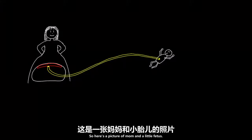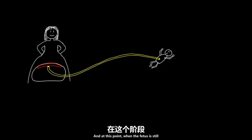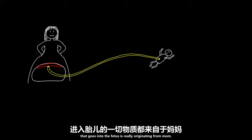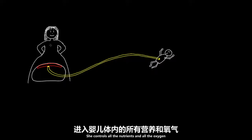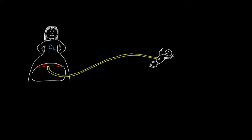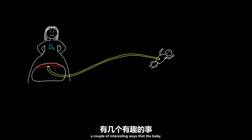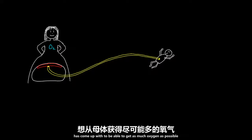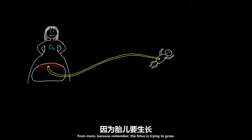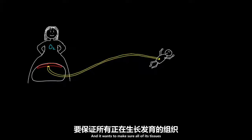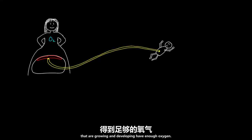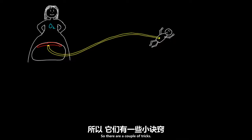Here's a picture of mom and a little fetus. At this point, when the fetus is still attached by the umbilical cord, everything that goes into the fetus is really originating from mom. She controls all the nutrients and all the oxygen that goes into that baby. With oxygen in mind, there are a couple of interesting ways that the fetus has come up with to get as much oxygen as possible from mom, because the fetus is trying to grow and wants to make sure all of its tissues have enough oxygen.